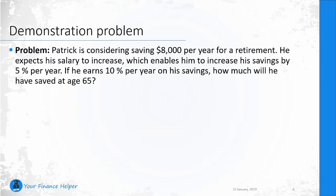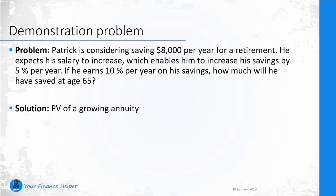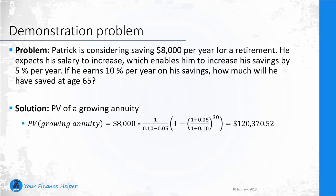For our demonstration problem: assume that Patrick is considering saving eight thousand dollars per year for retirement. He expects his salary to increase, enabling him to increase his savings by five percent per year. If he earns ten percent per year on his savings, how much will he have saved at age 65? The solution uses the present value of a growing annuity formula — plug in the numbers, which is not that difficult. One thing that might be tricky is figuring out the number of periods.